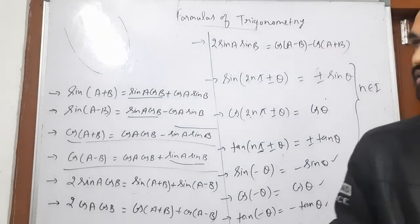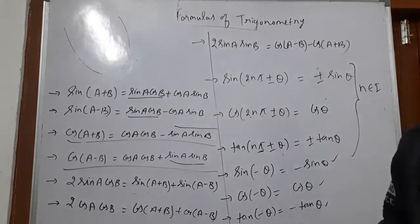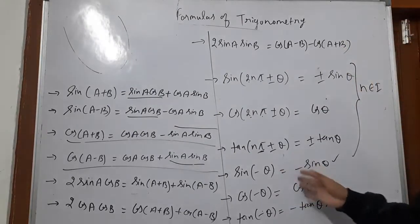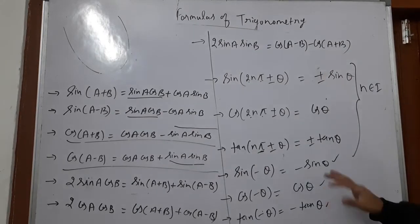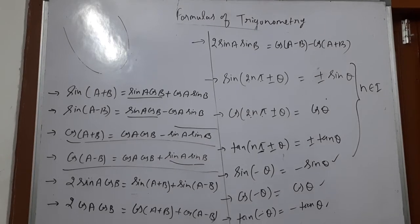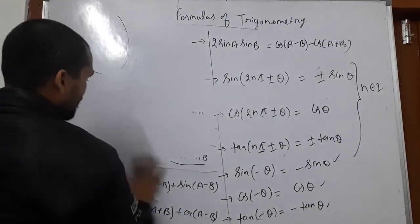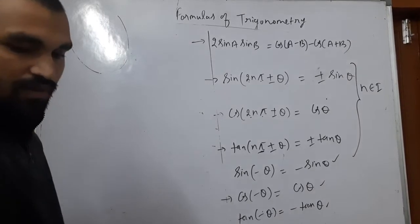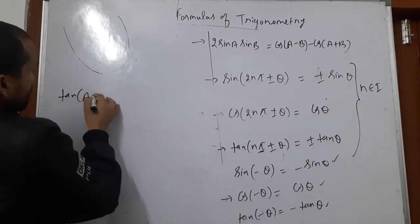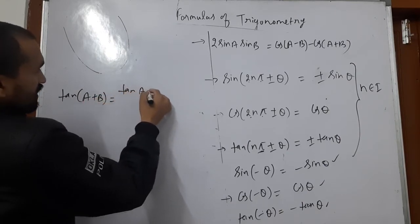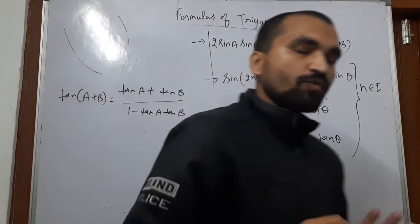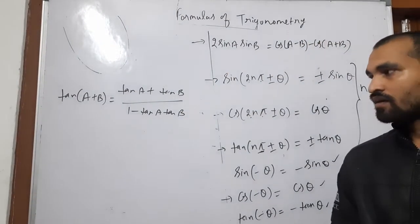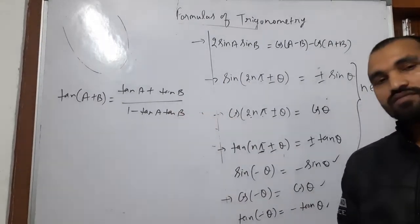We have discussed important properties related to trigonometry. These properties will be sufficient to solve problems of trigonometry up to diploma level or nearest class examination. One very important property remaining is tan A plus B. Tan A plus B is equal to tan A plus tan B divided by 1 minus tan A into tan B. This is a very very important property of trigonometry.